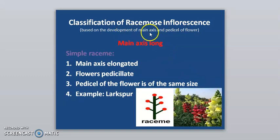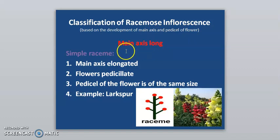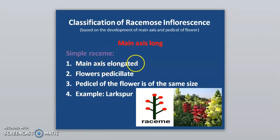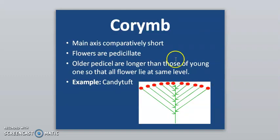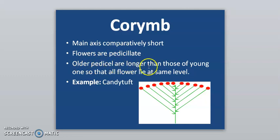Classification of racimose inflorescence is based on the development of the main axis and the pedestal of flowers. When the main axis is long: in simple raceme, the main axis is elongated, flowers are pedicellate and of the same size — example is larkspur. In corymb, the main axis is comparatively short, flowers are pedicellate, and older peduncles are longer than younger ones so that all flowers lie at the same level — example is candytuft.